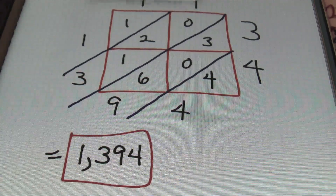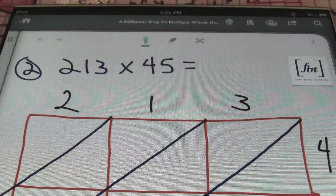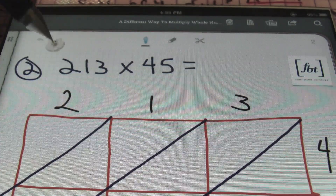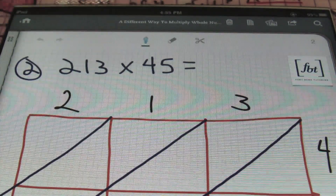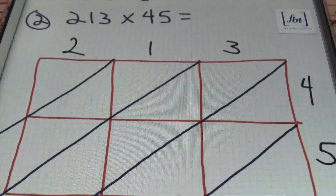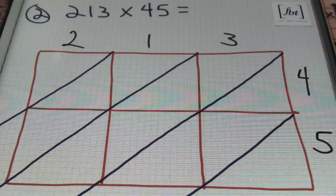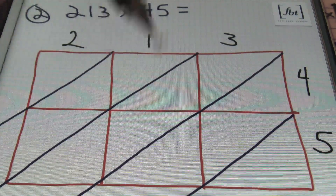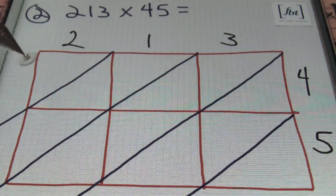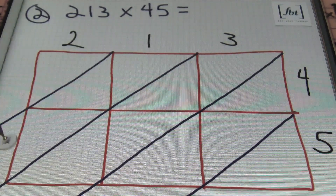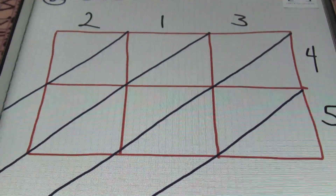Moving on to problem number two: 213 times 45. Notice that I have a three-digit number times a two-digit number. So I'm going to have three columns for two, one, and three, and because the second number is the two-digit number 45, I only need two rows — one row for the four and one row for the five.